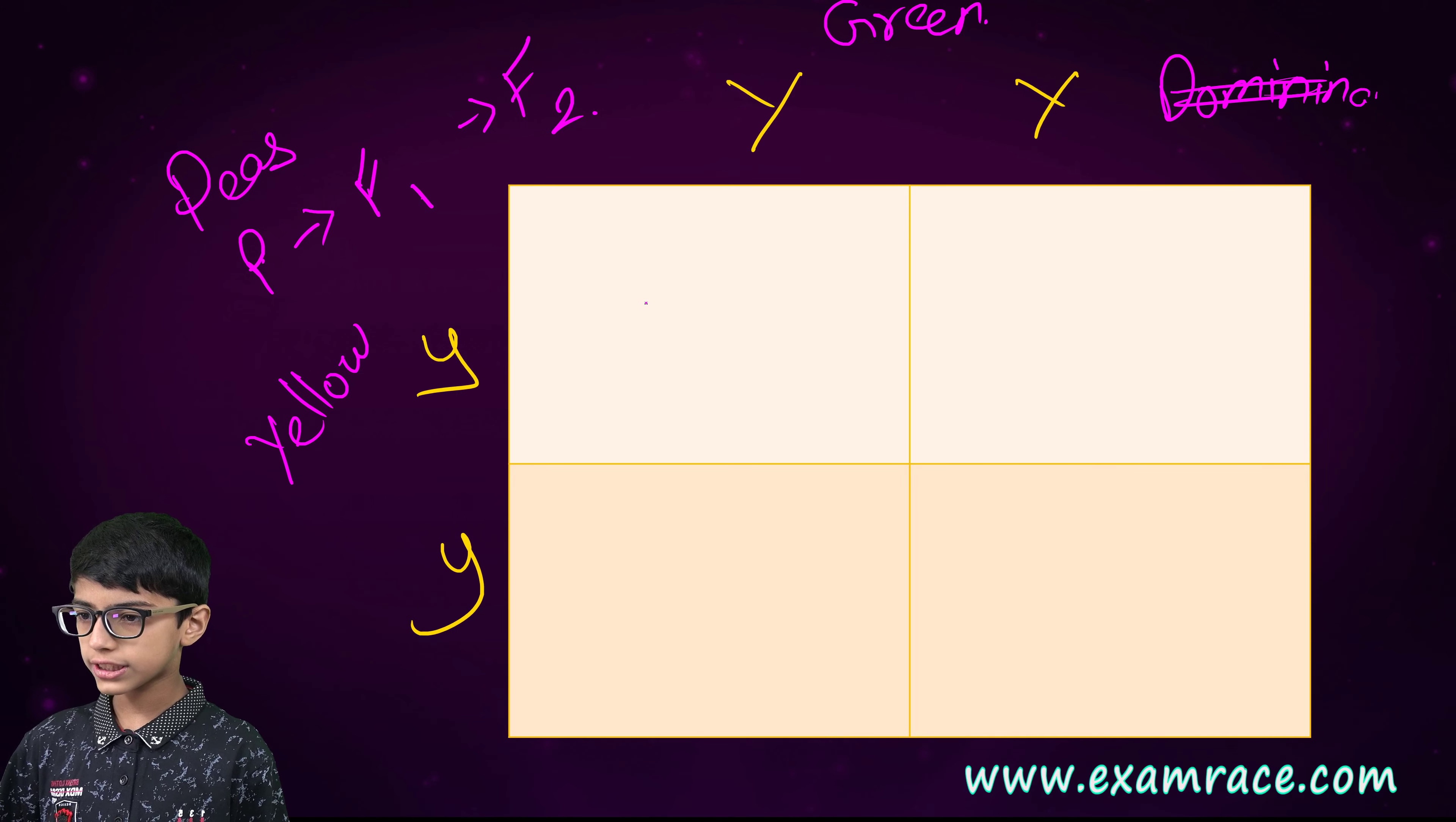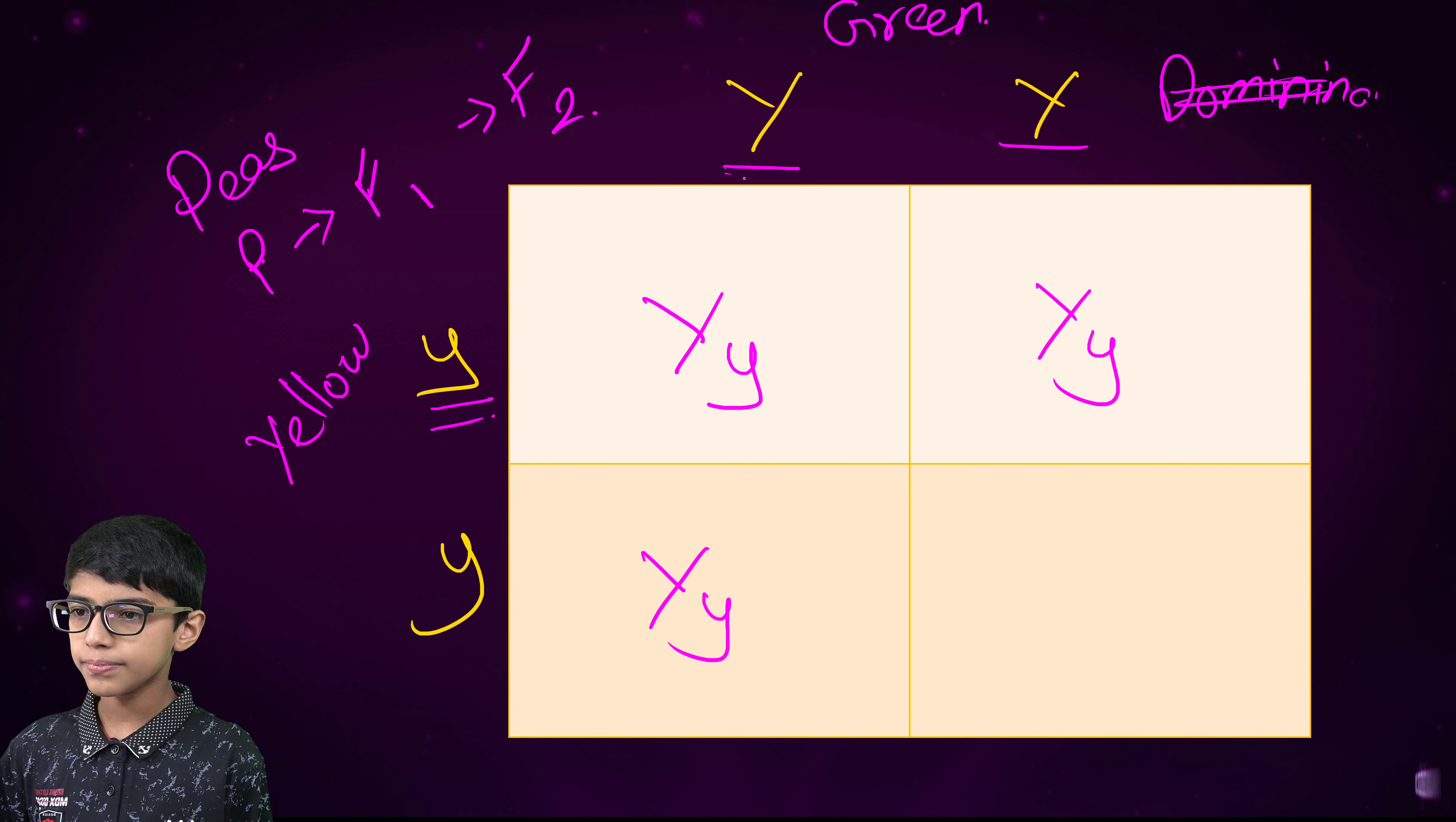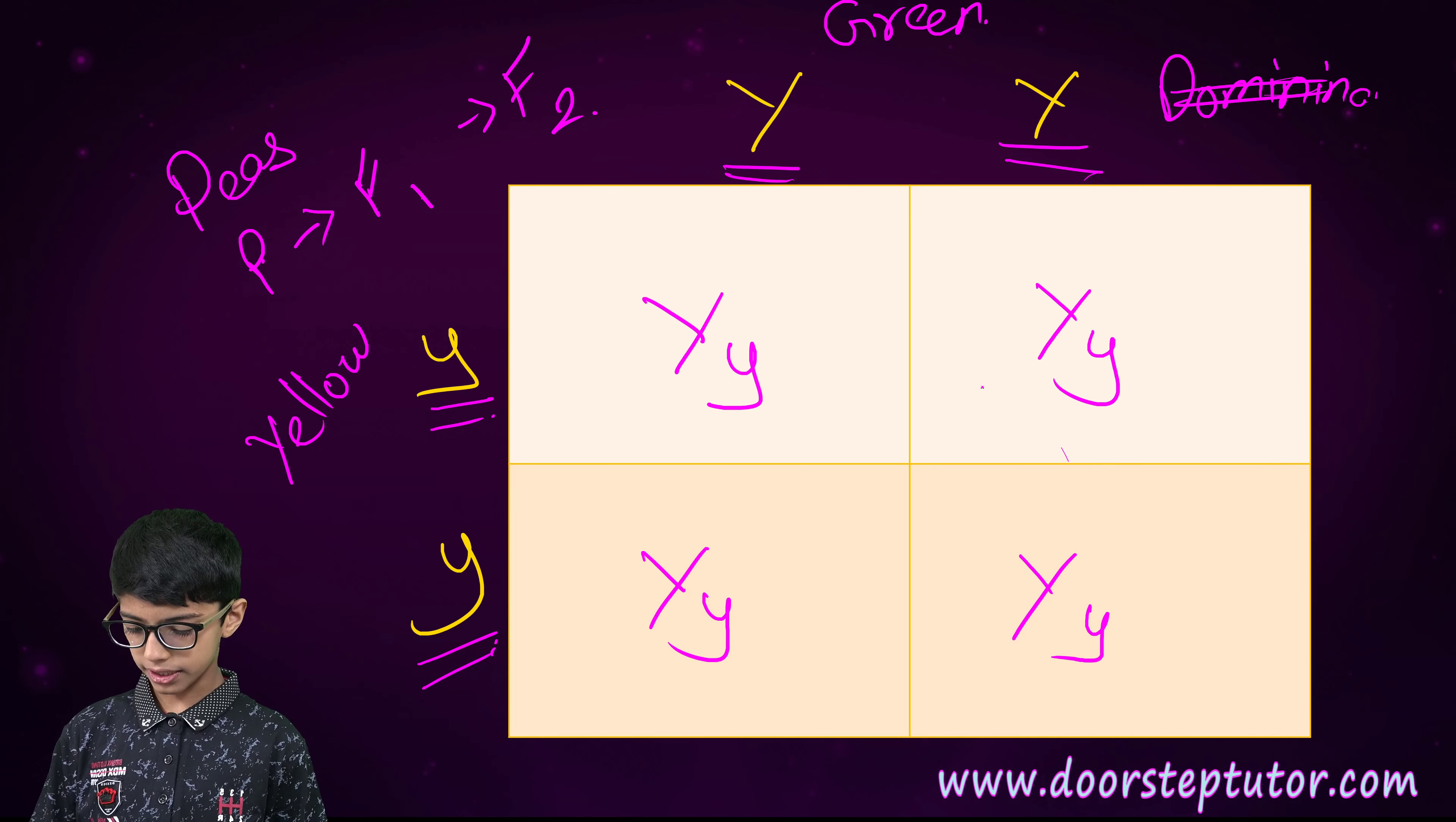Now, let's cross these. Here we will get a capital Y and a small y. Here we will get a capital Y and a small y. Here also we get the same. And what do we get here? Yes, that is a capital Y and a small y. So, these are the same.